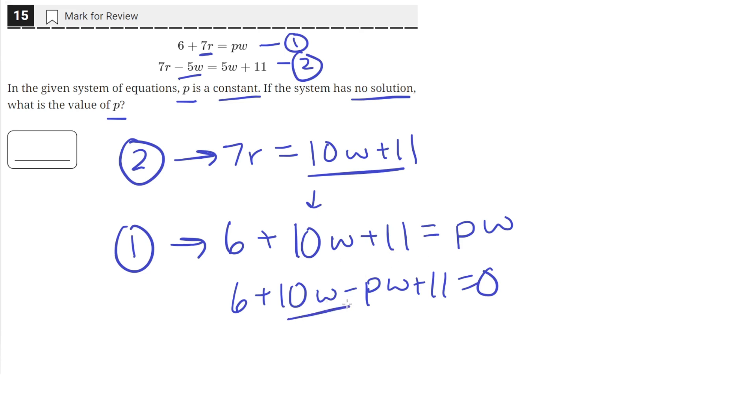We need the 10w to be canceled out by the pw, which means that p has to equal 10 because when p equals 10, 10w minus 10w is equal to 0.